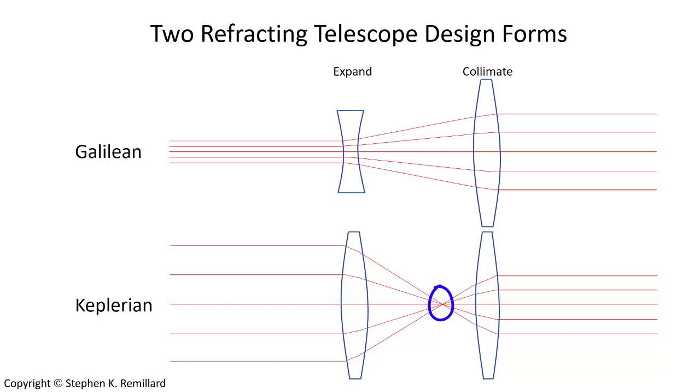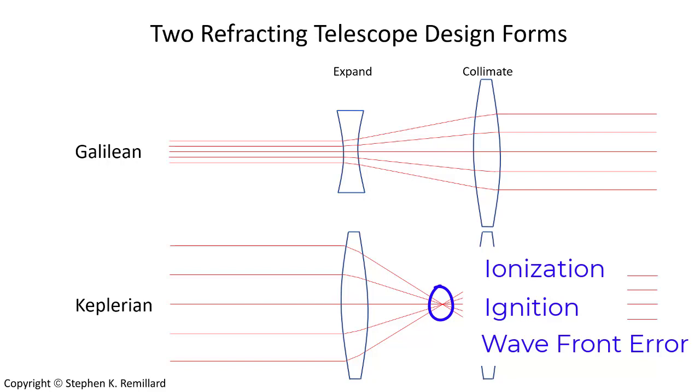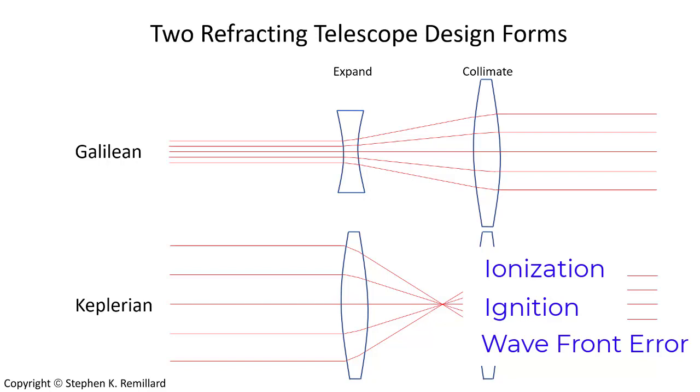What saves it from focusing to a single point is diffraction as well as aberration from the first lens. But with a high-power laser, you can expect to see ionization of the air at that point, dust particles igniting, and enhanced wavefront aberration due to heating of the air, causing the index of refraction at that point to change.